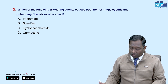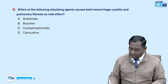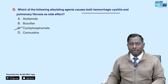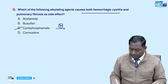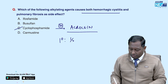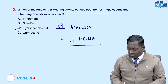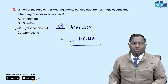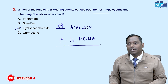Which alkylating agent causes both hemorrhagic cystitis and pulmonary fibrosis as side effects? Whenever hemorrhagic cystitis is mentioned, think cyclophosphamide. Cyclophosphamide has a metabolite called acrolein, which is toxic to the bladder and causes hemorrhagic cystitis. Cyclophosphamide is also associated with pulmonary fibrosis. To prevent hemorrhagic cystitis, we run an IV infusion of mesna. This was the 13th pharmacology question — keep revising and aim for 10 or more correct.